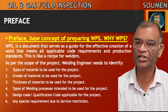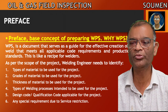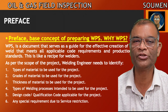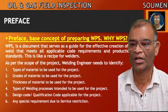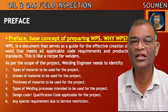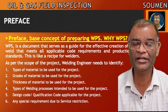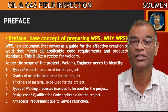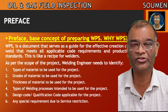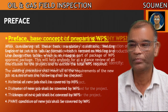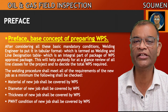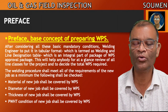As per the scope of the project, the welding engineer needs to identify the types of material to be welded, grades of material, thickness of the material, types of welding procedure available with the contractor, the design code and qualification code, and any special requirements due to service restrictions. For example, if it is a pipeline carrying sour service, then impact testing is a mandatory requirement for all welding procedures — this type of special restriction we need to consider. After considering these basic mandatory requirements and conditions, the welding engineer needs to put them in tabular format, which is termed the weld and line designation table.